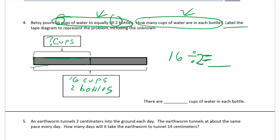Count by twos to figure it out: two, four, six, eight, ten, twelve, fourteen, sixteen — that's eight. So there are eight cups of water in each bottle. If it helps, you could also think of it as a multiplication: two times something equals sixteen. That might make it easier to solve.